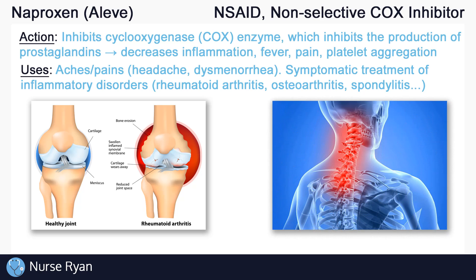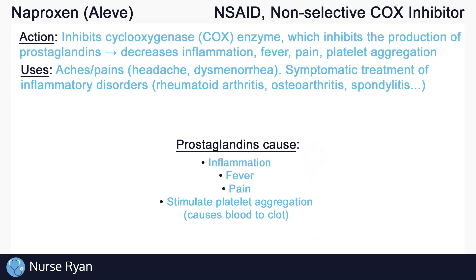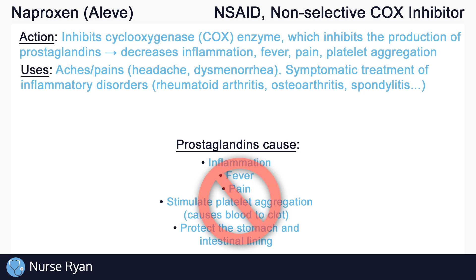There are many possible side effects of naproxen, so we'll just go over some of them here. We already went over some of the effects of prostaglandins, like inflammation, fever, and pain, but there's another important one — prostaglandins also help to protect the stomach and intestinal lining. So naproxen, because it inhibits prostaglandin production, can actually cause the opposite to occur, essentially causing damage to the stomach and intestinal lining. This damage can potentially lead to bleeding and ulceration of the stomach and intestine, which may present as stomach pains.